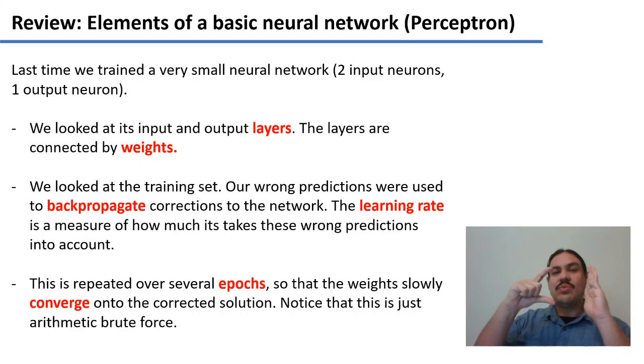We also regulated the degree of change using something called the learning rate, where we multiplied the change that we had, the error, by 0.1, for example. We did this over several epochs, until the network converged onto the values that we wanted. When the weights started to give us the multiplications that we wanted, we said that we had converged onto our solutions. And of course, this is just arithmetic, we're just trying to look for the right numbers for this kind of magic to happen.